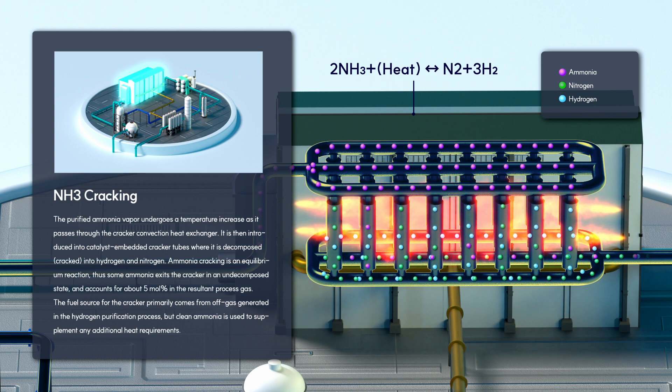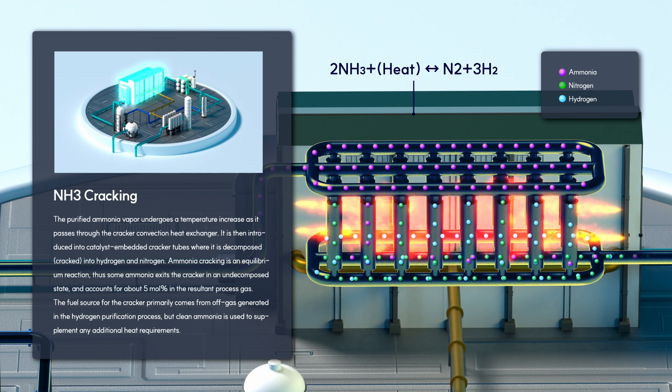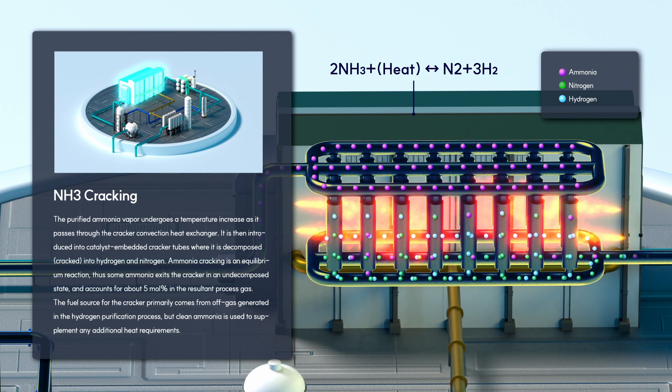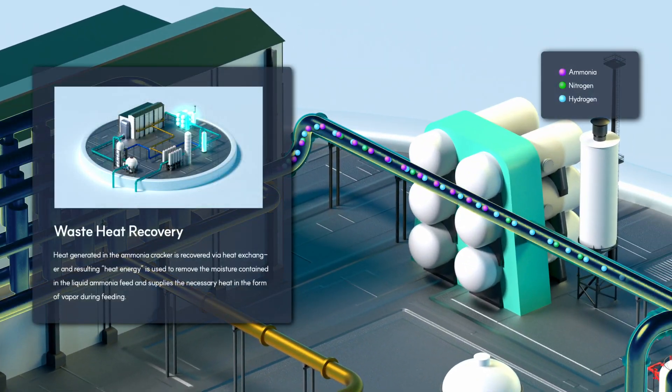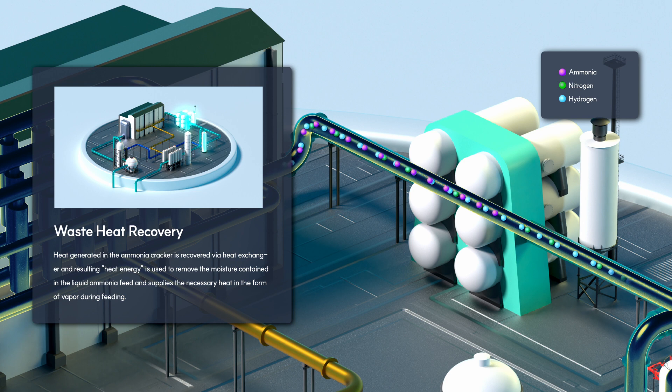The fuel source for the cracker primarily comes from off-gas generated in the hydrogen purification process, but clean ammonia is used to supplement additional heat requirements. Heat generated in the ammonia cracker is recovered via heat exchanger, and resulting heat energy is used to remove moisture from the liquid ammonia feed and supply necessary heat during feeding.